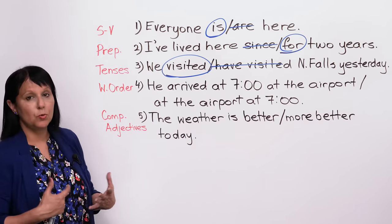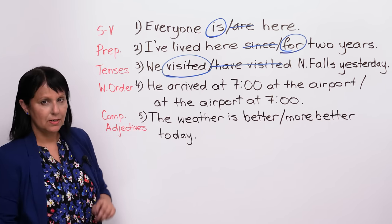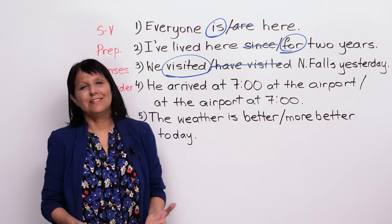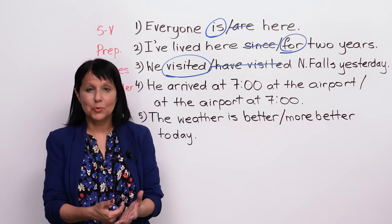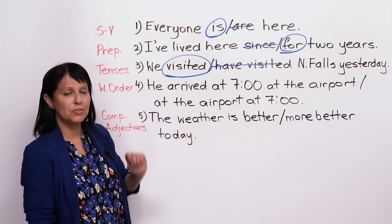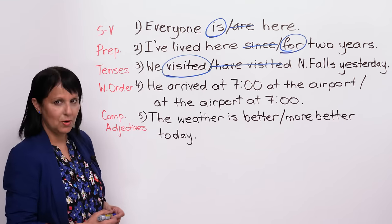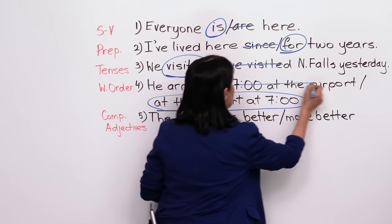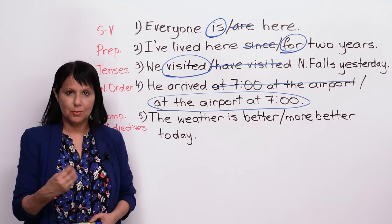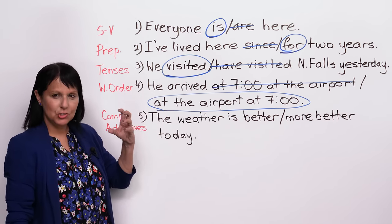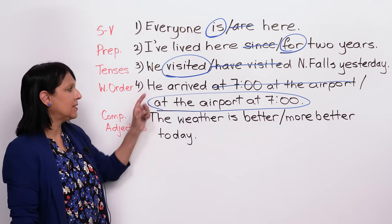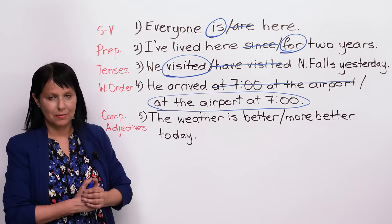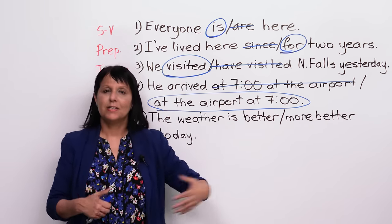Number four is a question of word order. 'He arrived at seven o'clock at the airport' or 'He arrived at the airport at seven o'clock' — which is correct? In English, it does matter. The correct one is 'He arrived at the airport at seven o'clock.' The principle is that we have to mention place before time. 'I arrived at the party at seven o'clock,' 'I arrived at the airport at seven o'clock,' 'I arrived at the office at seven o'clock' — not the other way around. Once you understand the principle, you can apply it when speaking and writing.